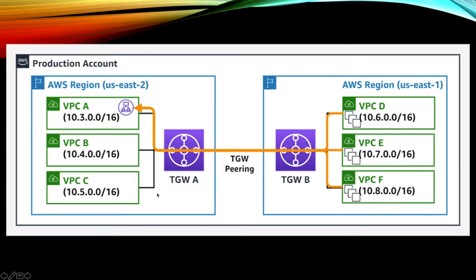Similarly on the route table, any traffic going from this particular CIDR block from this VPC or from this region will take this TGW peering path. So you will end up adding three different rules saying that for one CIDR take TGW peering, for second CIDR take TGW peering path, and for third CIDR take this peering connection.